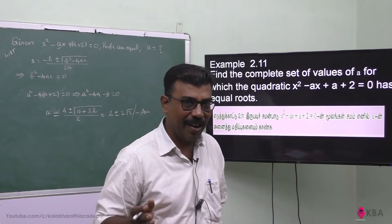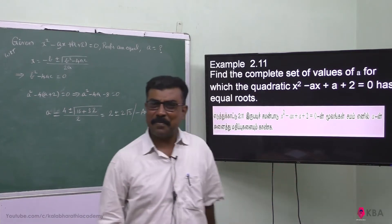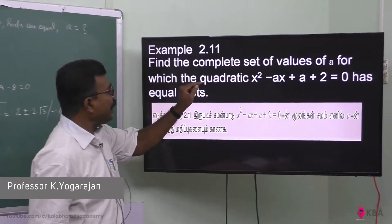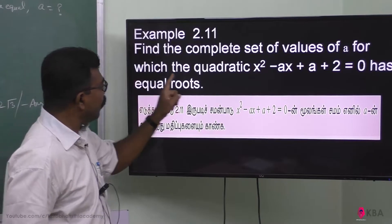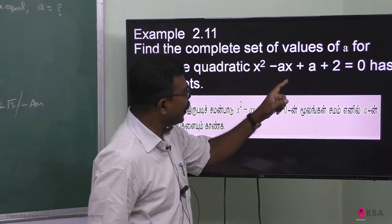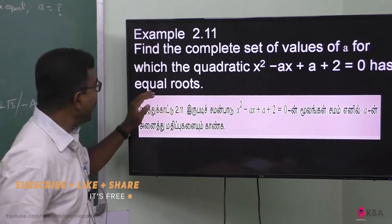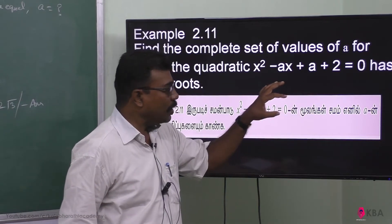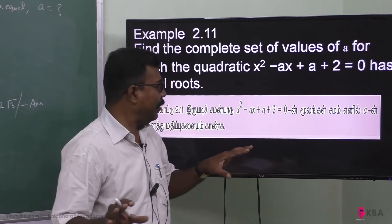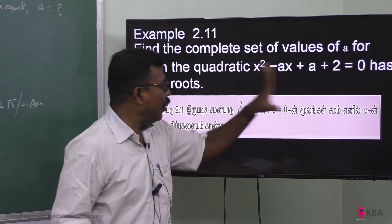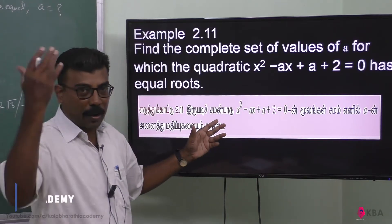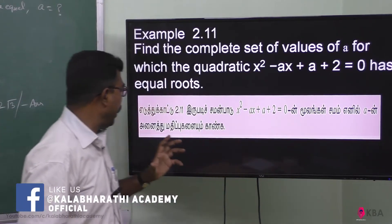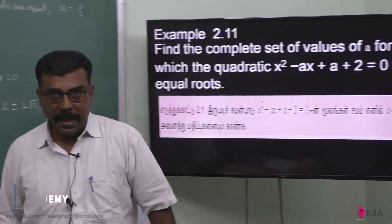We are going to solve: find the complete set of values of 'a' for which the quadratic equation x² - ax + a + 2 = 0 has equal roots. இது ஒரு quadratic equation, அவனுடை roots equal இருக்கு, அப்படினா A-ஓட value என்ன? இங்கப் பாரங்க — quadratic இருபடி சமன்பாடு x². A-வினுடை அனைத்து மதிப்புகளையும் காண்க என்பதை கேட்டிருக்காங்க.